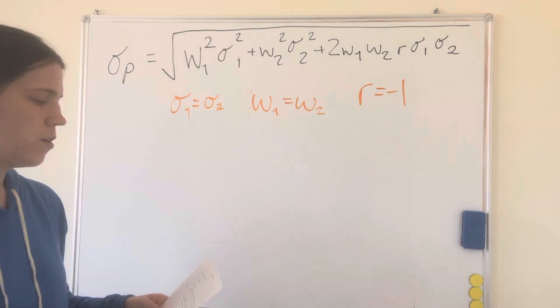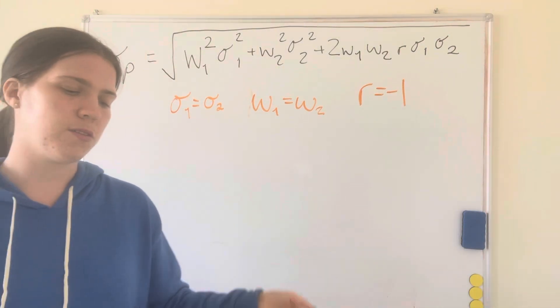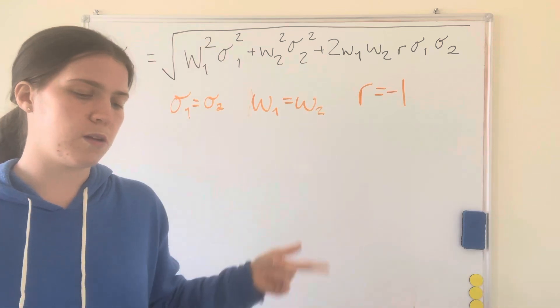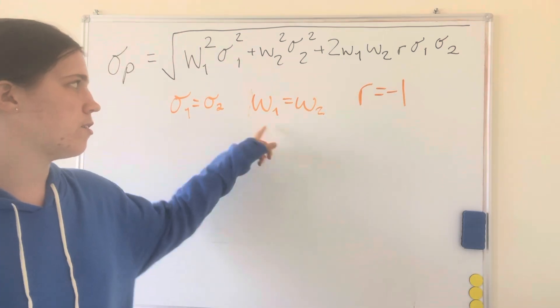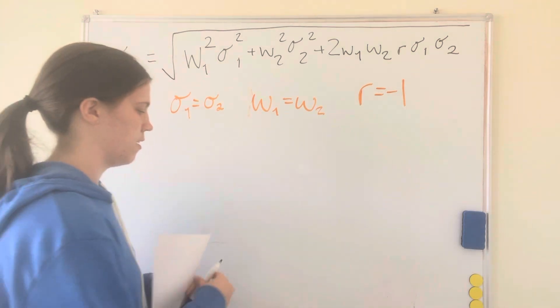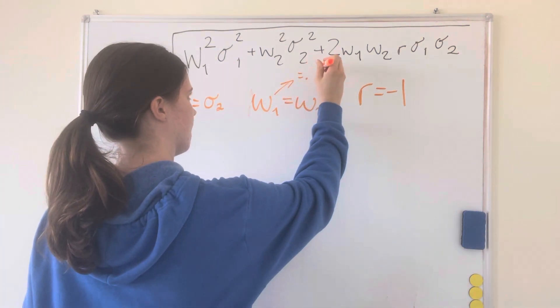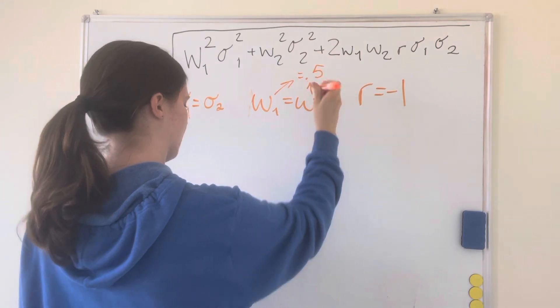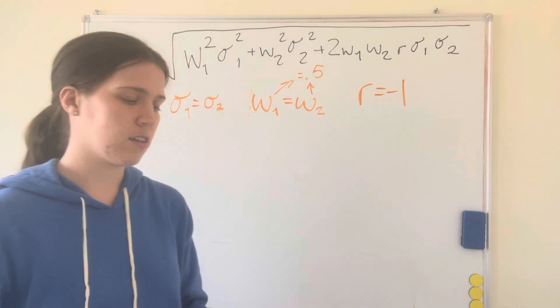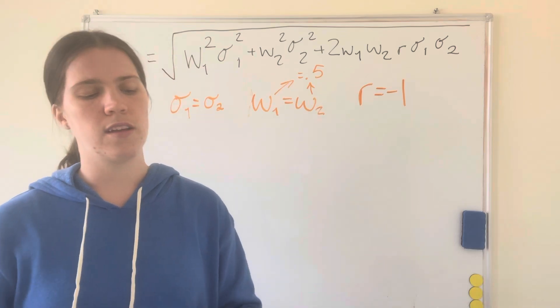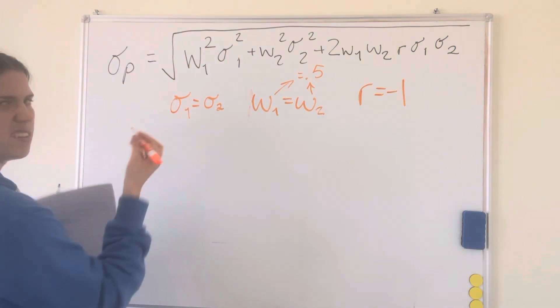So for example, we said that since the equation for w2 is 1 minus w1, the combination of them is going to equal 1. So since they're even they'll have to be 0.5. And we still have r equals negative 1, that's good. And then we've been told that sigma 1 and sigma 2 both equal 5. Just round them.